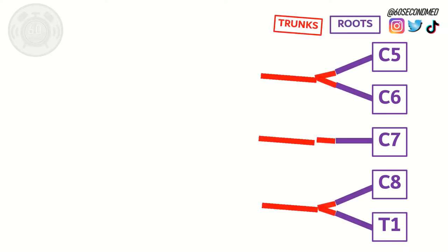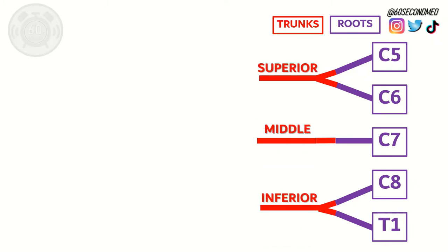The brachial plexus consists of the anterior rami of nerve roots C5 to T1. After the nerve roots come the trunks of the brachial plexus. C5 and C6 join together, C8 and T1 join together, and C7 stays on its own. The names of these trunks are the superior, middle, and inferior trunk.